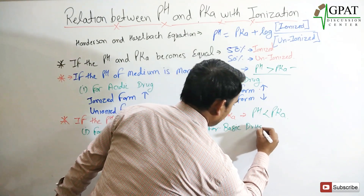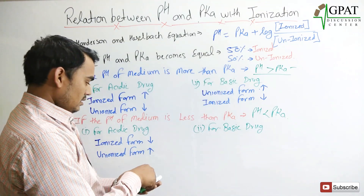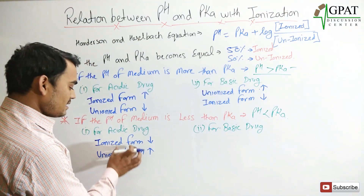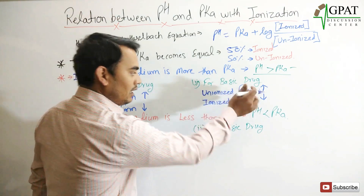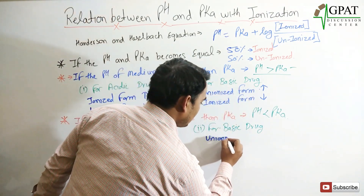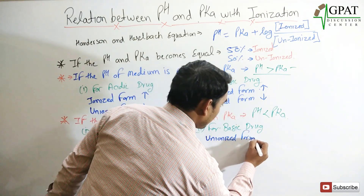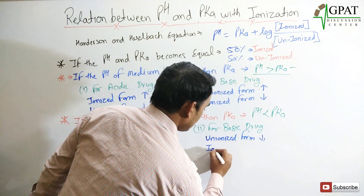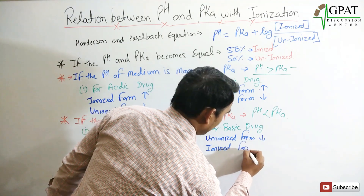For a basic drug when pH is less than pKa: the unionized form decreases and the ionized form increases.